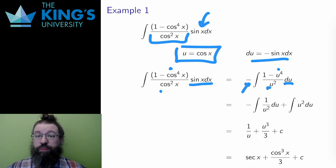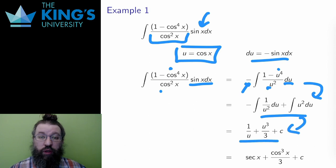All the cosines are replaced with u, and the sinx dx is replaced with negative du. I'll pull the negative out, split up the numerator, and do the two power rule integrals, which result in 1 over u plus u cubed over 3 plus c. Then I reverse the substitution. Here I choose to write 1 over cosine as secant in the answer.